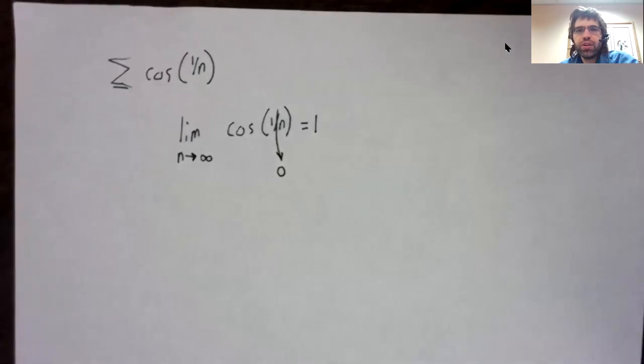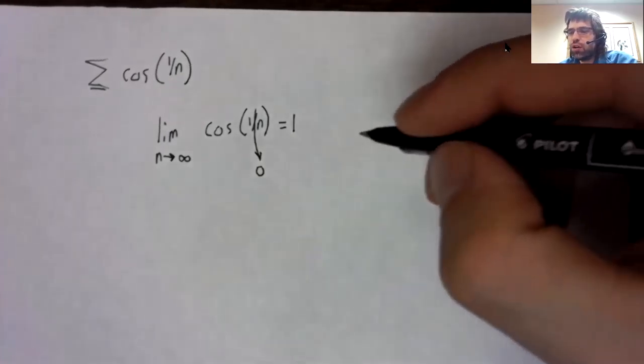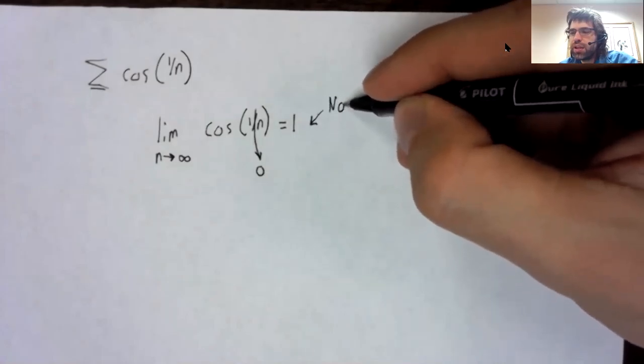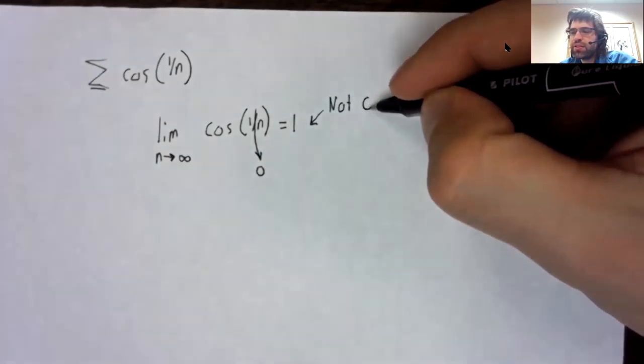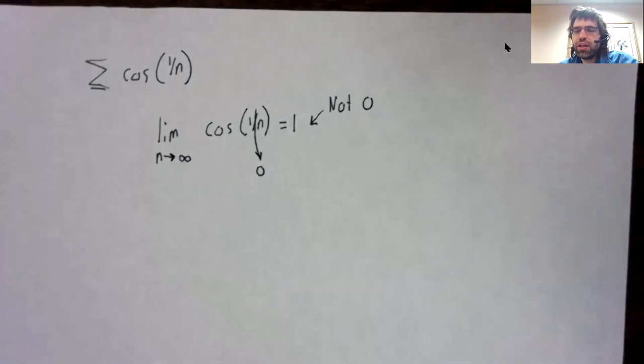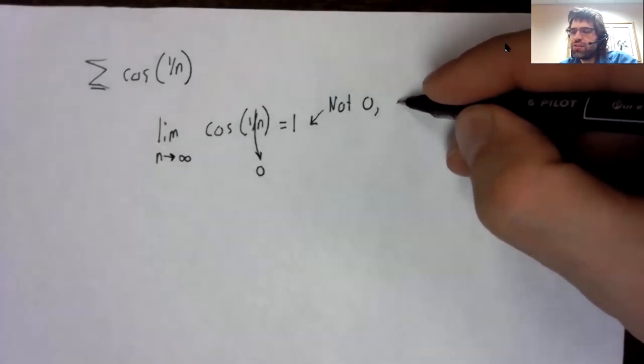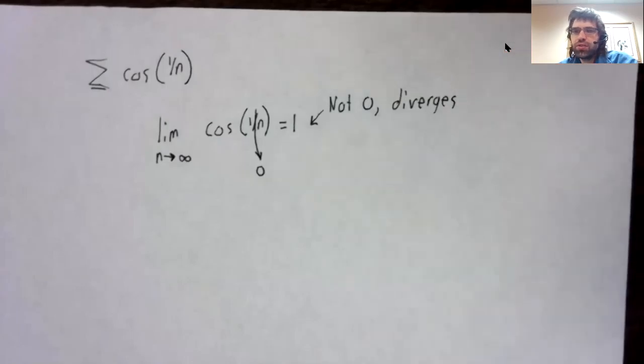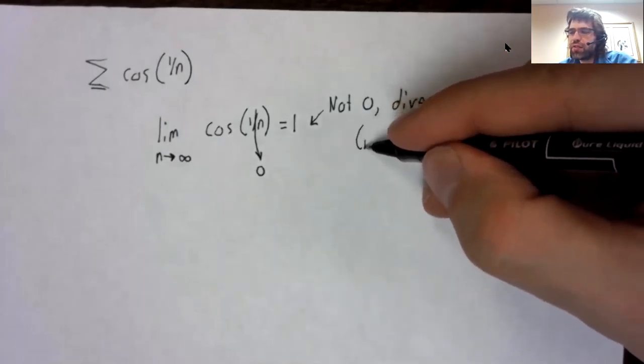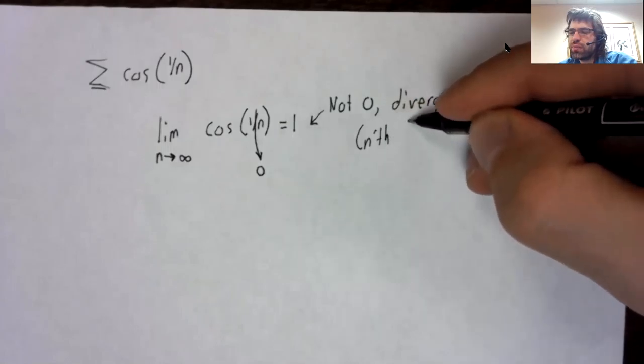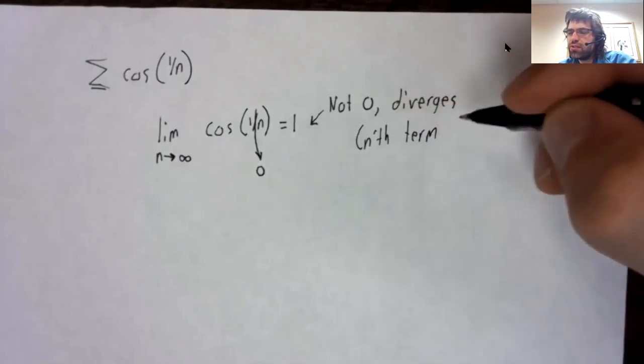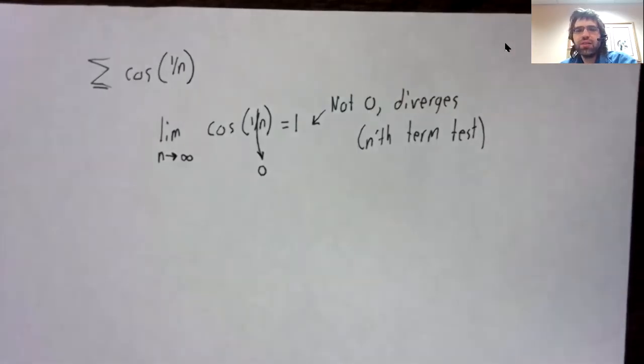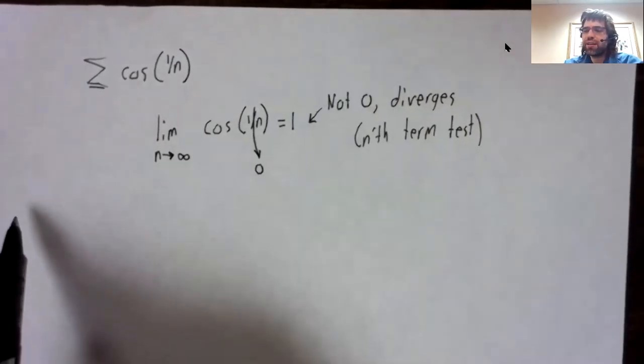And the cosine of zero is one. And if the limit is ever anything other than zero, the series diverges. That is the nth term test.